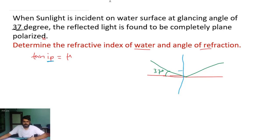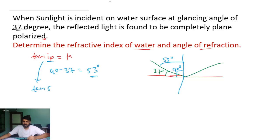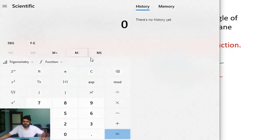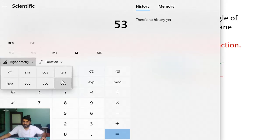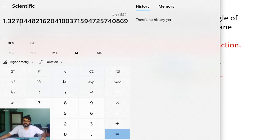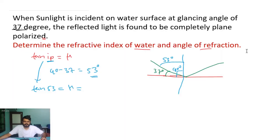The total angle is 90 degrees, so the angle of incidence is 90 minus 37, which equals 53 degrees. Therefore the refractive index is equal to tan(ip), so tan(53°) equals the refractive index. Using a scientific calculator, tan(53°) equals 1.327. So the refractive index of water is 1.327.